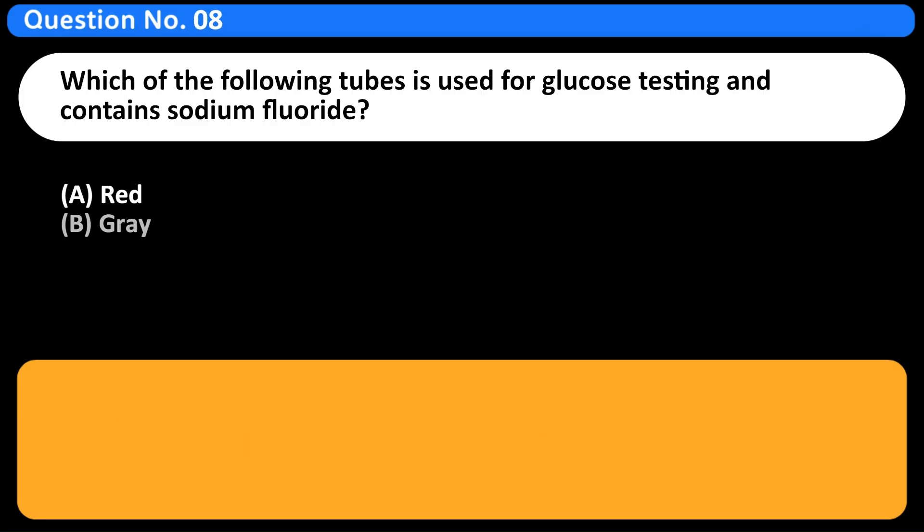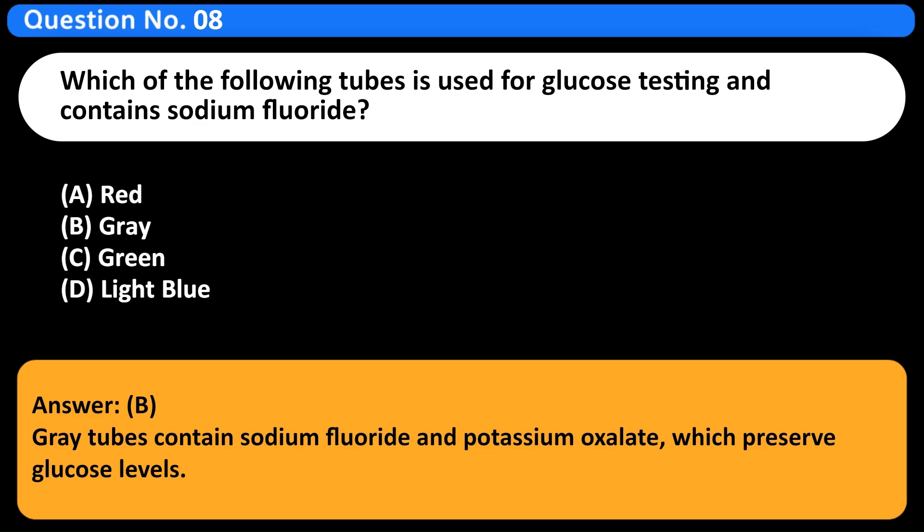Which of the following tubes is used for glucose testing and contains sodium fluoride? A. Red. B. Gray. C. Green. D. Light blue. Answer B. Gray tubes contain sodium fluoride and potassium oxalate, which preserve glucose levels.